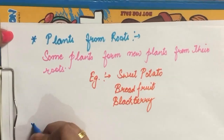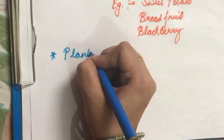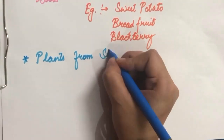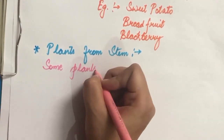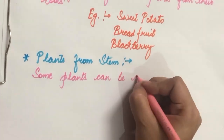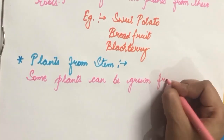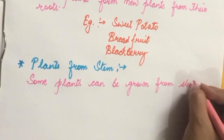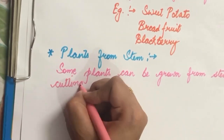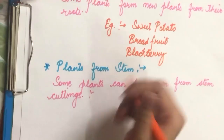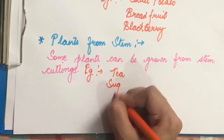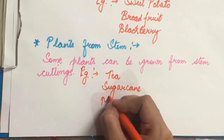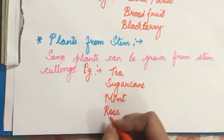Now let's move on to Plants from Stem. Similarly, some plants can be grown from stem cuttings. Examples in this category include Tea, Sugar Cane, Mint, Rose, and Jasmine.